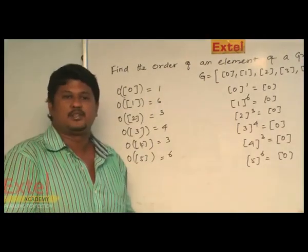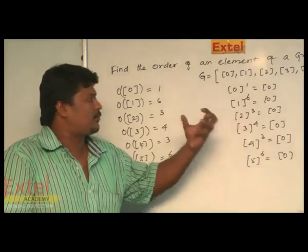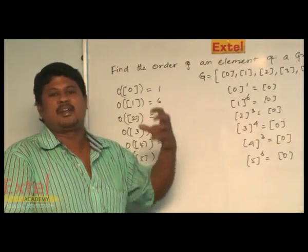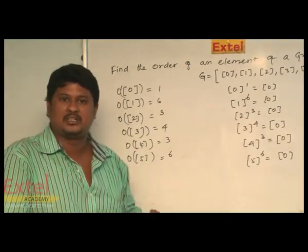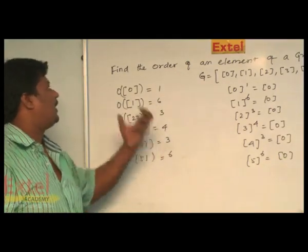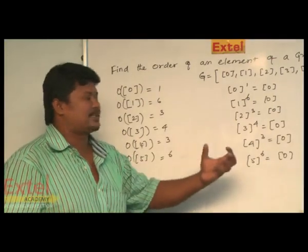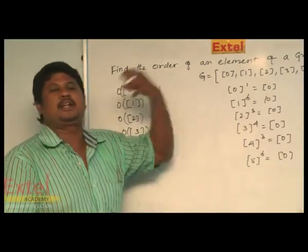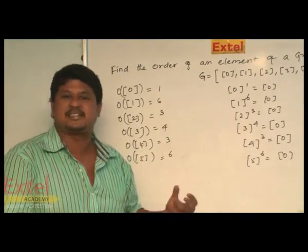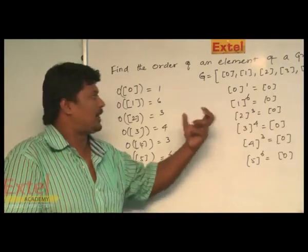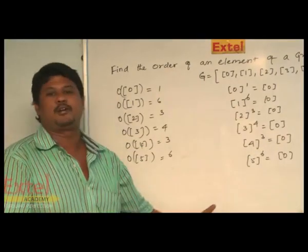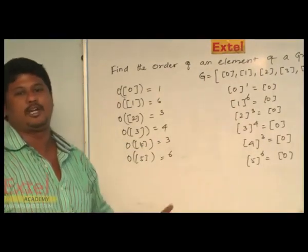You will get 6 marks for this problem. The key thing to keep in mind is: a power m equals e, then order of a is equal to m, where m is the least positive integer. This is how we find the order of each element. If they ask a question like this, immediately take the group G as {0, 1, 2, 3, 4, 5} since Z6 is addition modulo 6. This is the way to find the order of an element in a group.